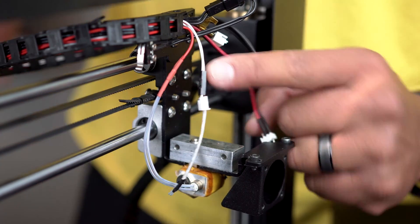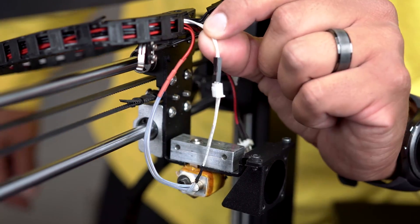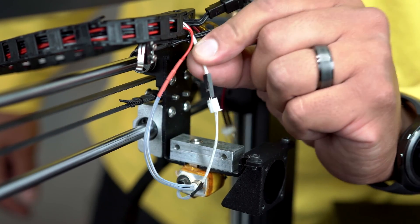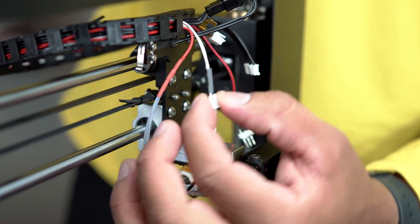Hey, what's up guys. This is Zach from Wanhao USA, and today I'm going to show you how to replace your extruder thermistor. The first thing you need to do is locate your thermistor inside of your heating block.